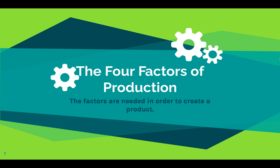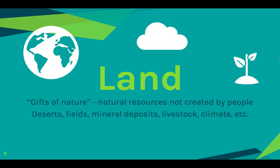There are four factors of production. These factors are needed in order to create a product. Once you figure out what you are producing, how you are producing, and for whom, you have to figure out what things you actually need in order to start production. The first one is land — these are gifts of nature, things not created by people, so natural resources. Stuff like deserts, fields, mineral deposits, livestock, and climate are all considered land. Land is not just the physical land, but also other natural resources that are on the land.